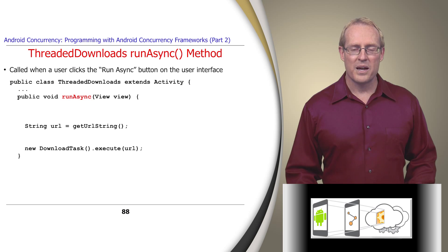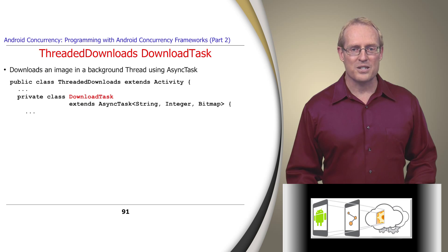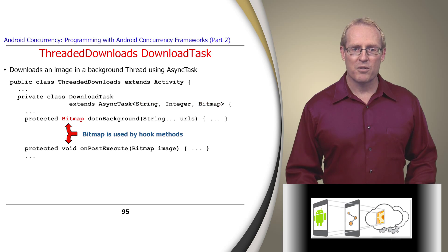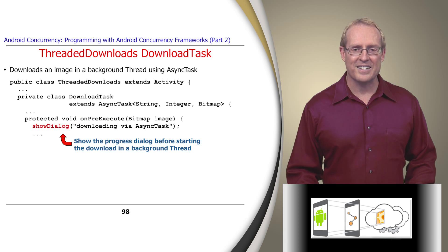The RunAsyncTask method begins by obtaining the requested URL from the user's input. It then creates and executes an anonymous instance of the DownloadTask class. DownloadTask is a private class that extends AsyncTask, parameterizing it with a string for the URL type and a bitmap used as the return type for the DoInBackground hook method and as a parameter to the OnPostExecute hook method. When the ExecuteTemplate method is called on the DownloadTask object, the AsyncTask framework invokes its OnPreExecute hook method, which starts showing the progress dialog in the context of the user interface thread before the task starts executing in the background.